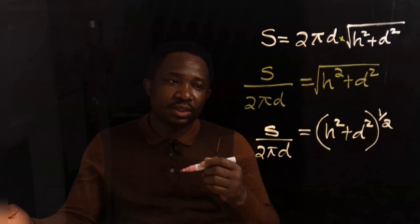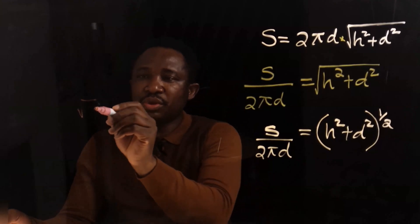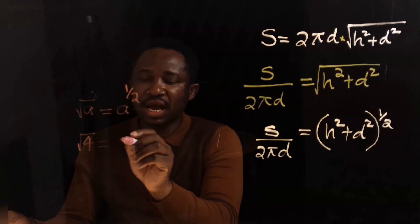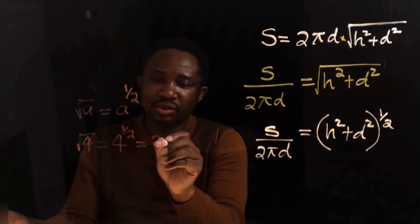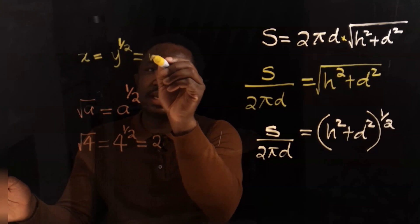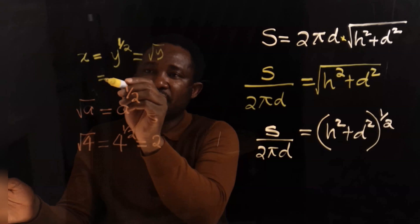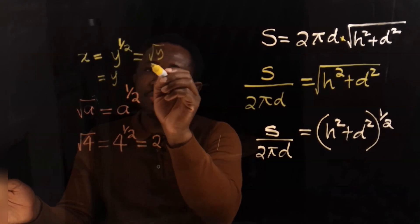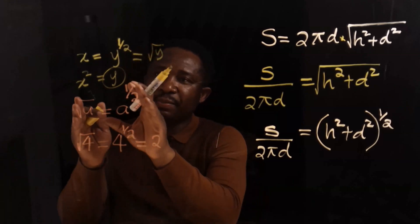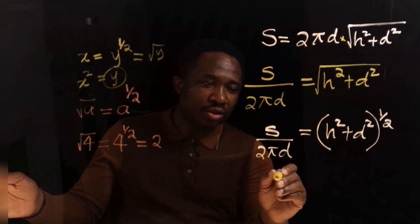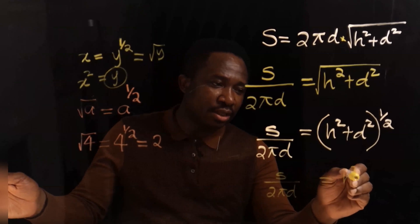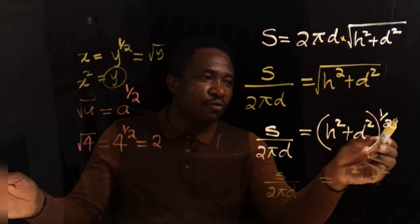Recall in mathematics, the square root of A is the same as A to the power of 1 over 2. For example, the square root of 4 equals 4 to the power of 1 over 2, which is 2. If X equals the square root of Y, and we want to make Y the subject, whenever the square root moves across the equal sign it becomes squared. Applying this here, S over 2 pi D on the left has the square root, which we want to remove.